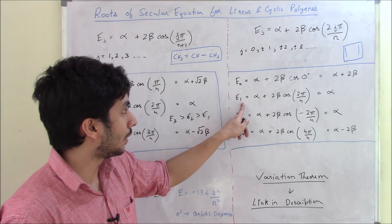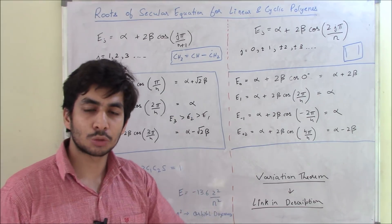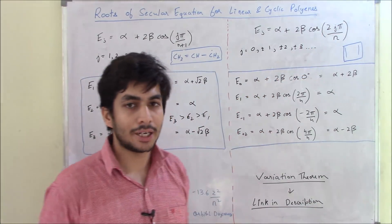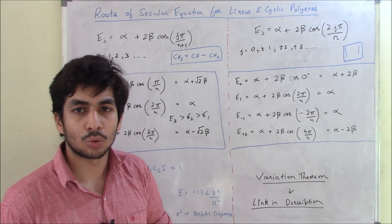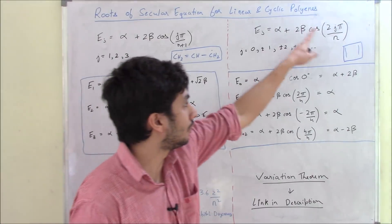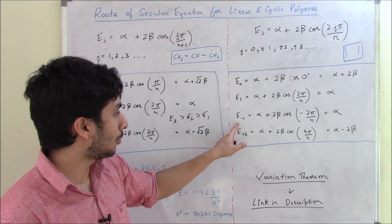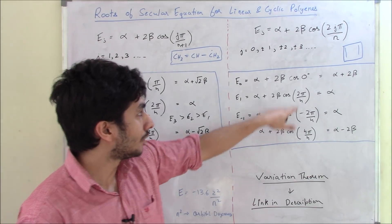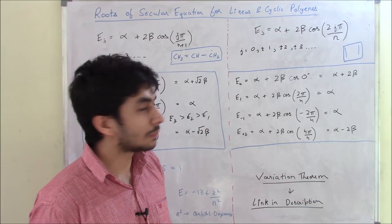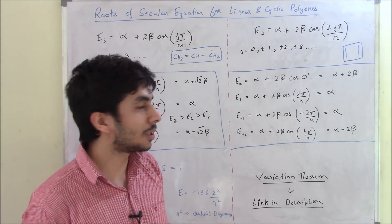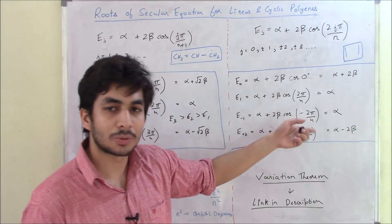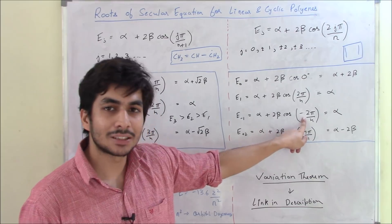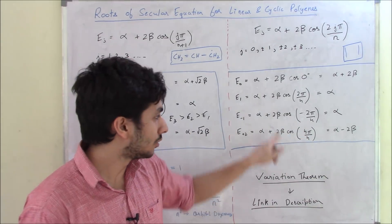For E1 (j = +1): E1 = alpha + 2 beta · cos(2π/4) = alpha + 2 beta · cos(π/2). Cos 90° = 0, so E1 = alpha. For E−1 (j = −1): cos(−2π/4) = cos(−π/2). Cosine in the fourth quadrant is positive, and cos(−90°) = 0, so E−1 = alpha as well. So E1 and E−1 are both equal to alpha.